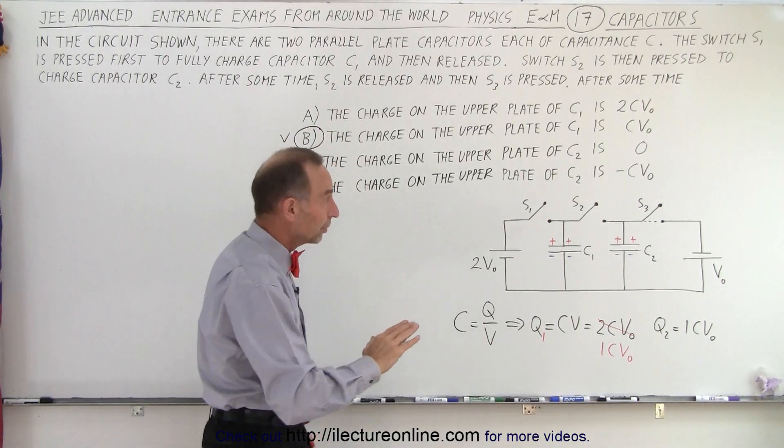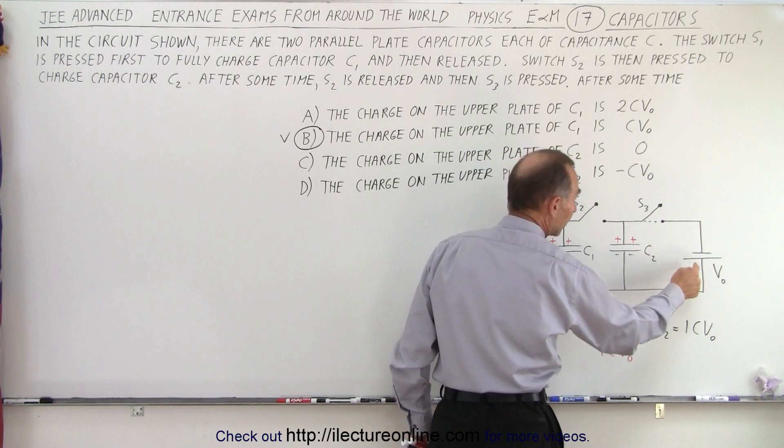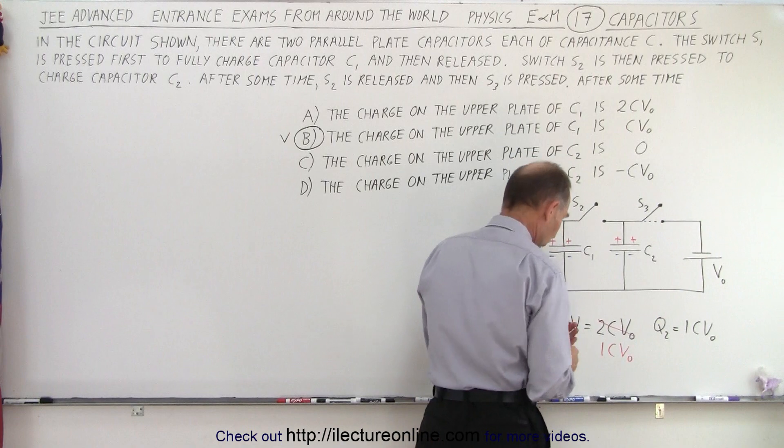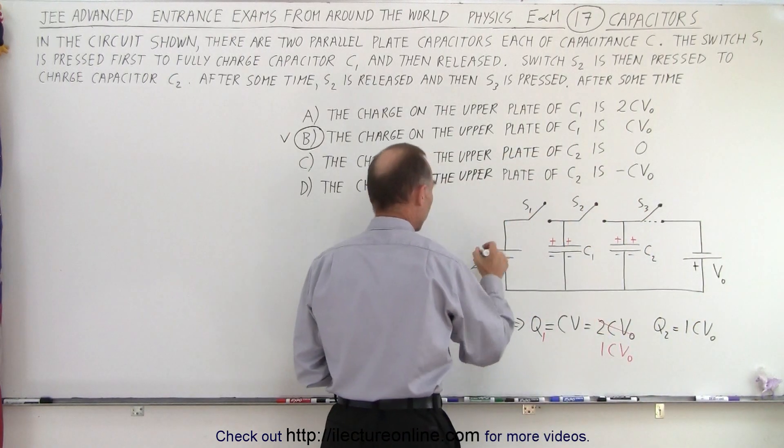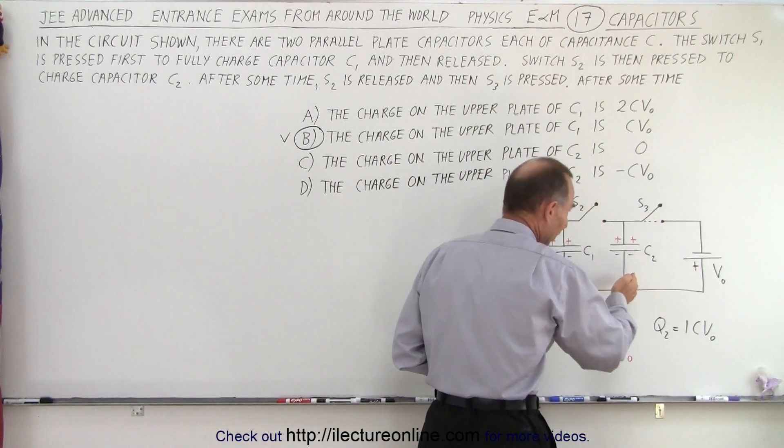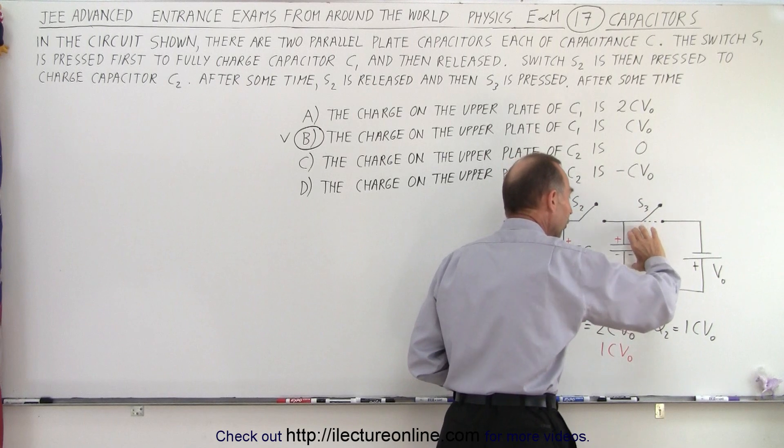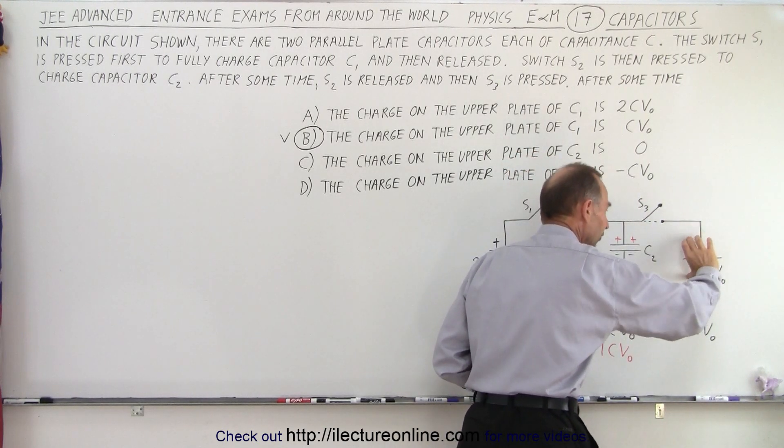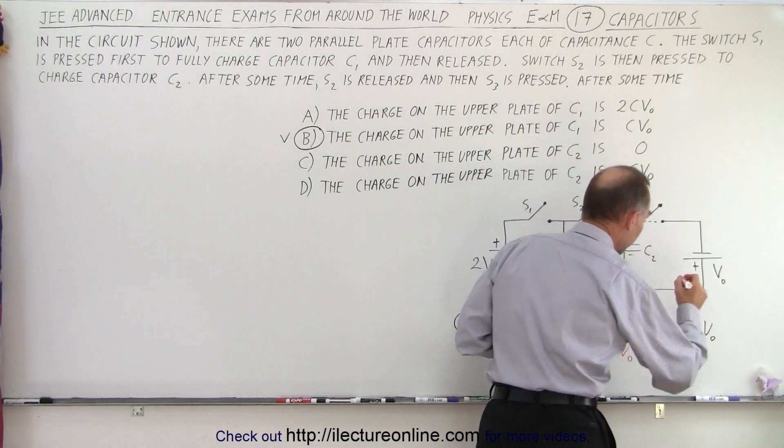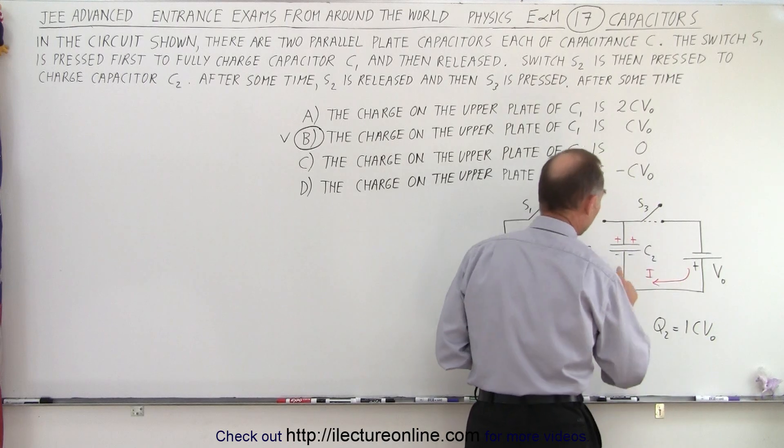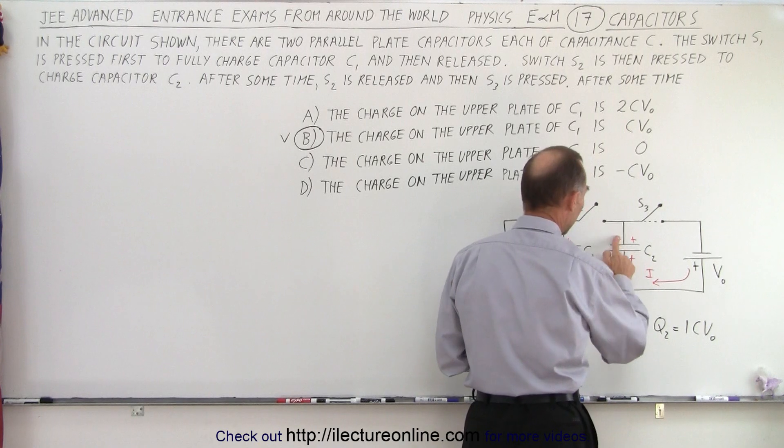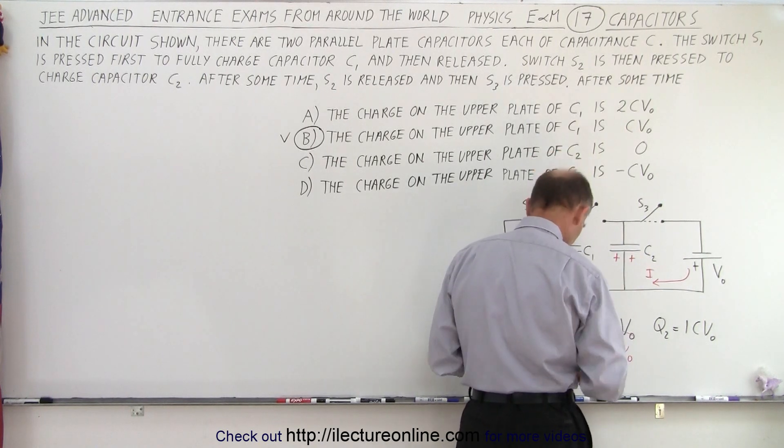Well what happens further now that we close S3? Notice now this battery is driving charges through the circuit, but notice that this is the positive side on this battery, whereas over here the positive side was on this side. Which means that current will flow in this direction and will continue to do so until the voltage difference across this capacitor equals the voltage difference across the battery. Which means that now charge will be driven in this direction. So the current will flow in this direction. That means this side will fill up a charge, positive charge on this side, and will have negative charge on this side.